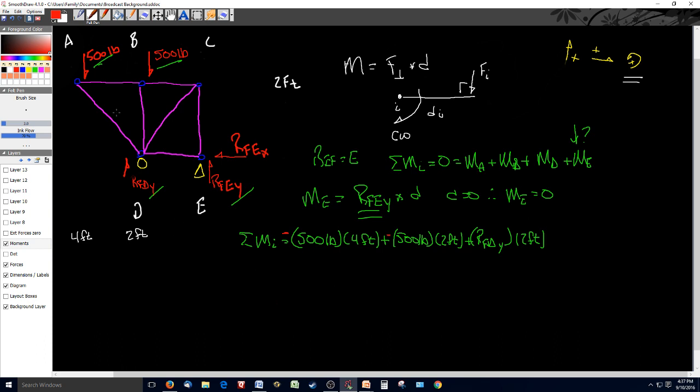So we can simplify this formula, and what I'm going to do here now is transition to red. I can simplify it and say RF_DY times two feet equals - I'm going to move my moment at A and the moment at B to the other side of the equation. So that equals 500 pounds times four feet plus 500 pounds times two feet, or equals 3,000 pounds feet, so RF_DY times two feet.